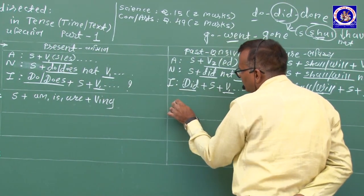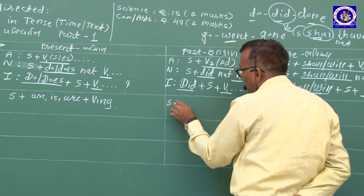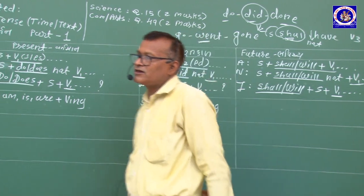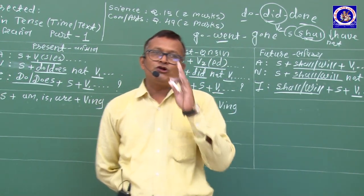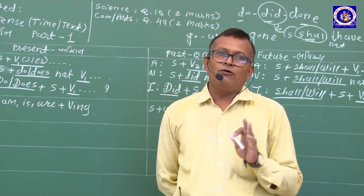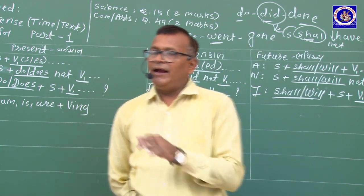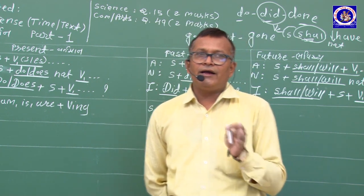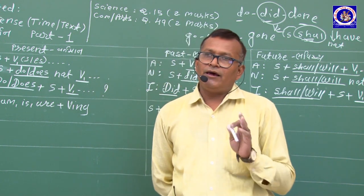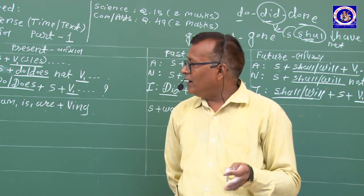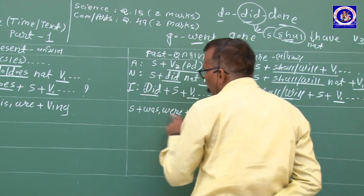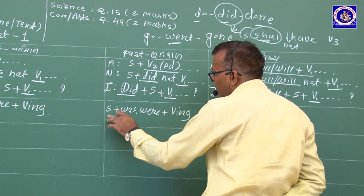Past Continuous Tense — ચાલુ ભૂતકાળ: ભૂતકાળમાં બે ક્રિયા એકસાથે ચાલુ હતી. ઉ = 'At that time I was teaching' — જ્યારે વરસાદ આવ્યો ત્યારે હું શીખવી રહ્યો હતો. Signal words: when, while, as, then, at that time, yesterday. was/were + Verb-ing.